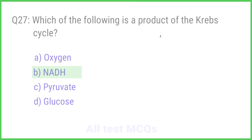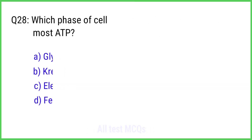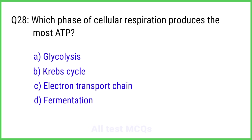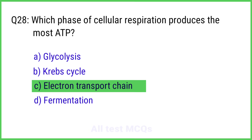Question No. 28. Which phase of cellular respiration produces the most ATP? The right answer is Option C: Electron transport chain.